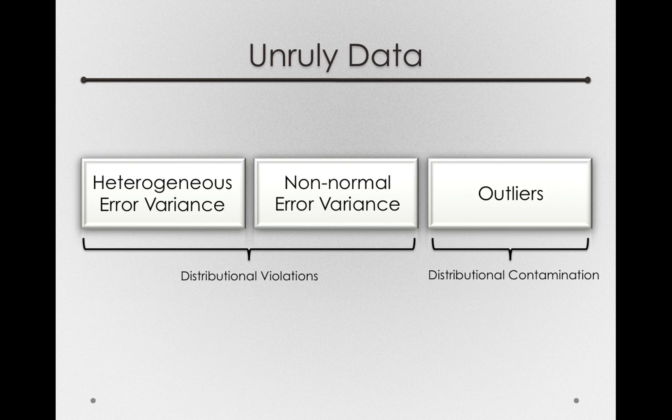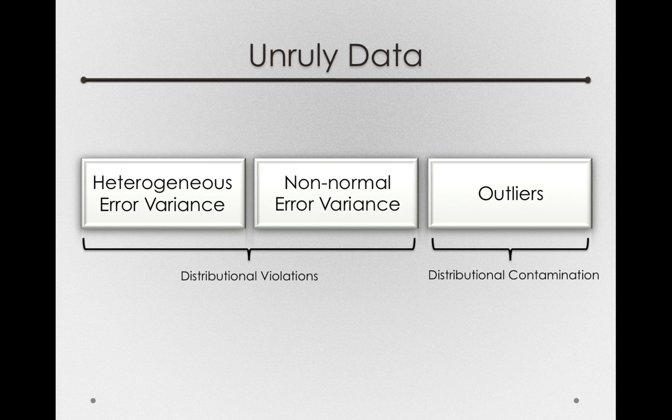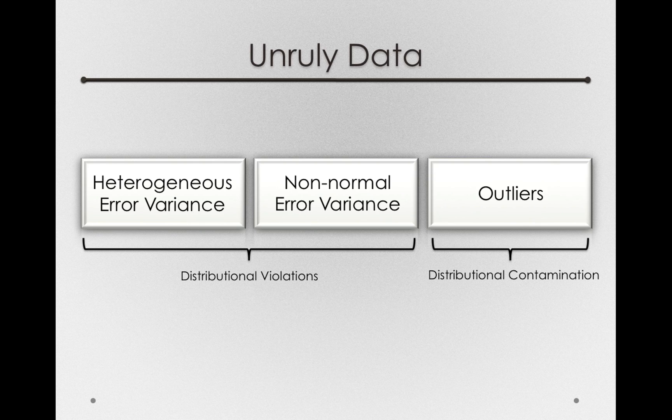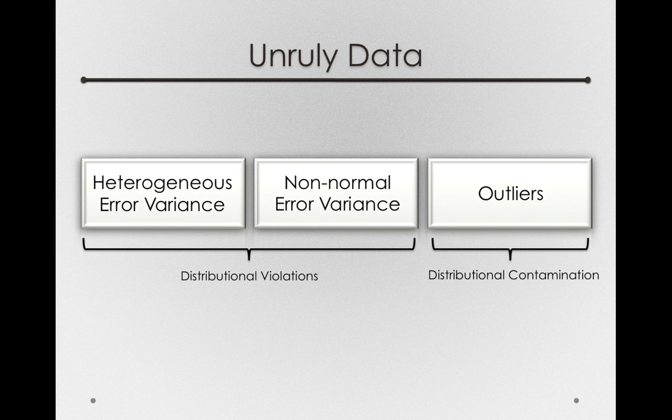Now, we'll talk later about outlier detection procedures when we talk about the topic of regression, and non-normal error variance will also address later on, although I should mention now it'll end up being less of a problem, especially when you have large sample sizes, owed of course to the central limit theorem. So I want to spend our time in this module talking most about heterogeneous error variance, what it is, and how we can detect it.